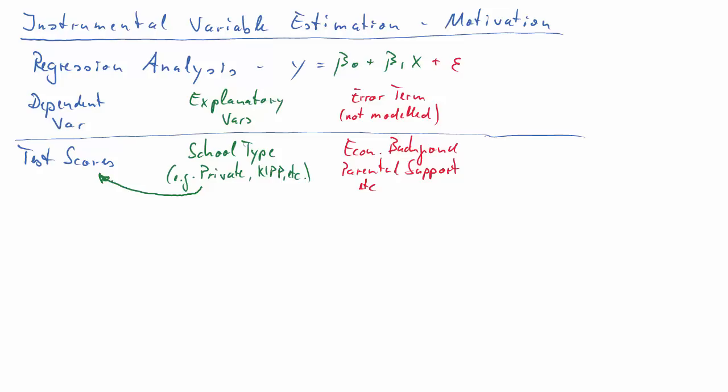Issues now arise for the following reason. All the aspects which we cannot model, perhaps economic background, perhaps that could be modeled, by the amount of parental support, for instance, that of course has an impact on the test scores. But our model doesn't really capture it. They go into the error term.